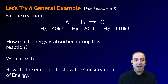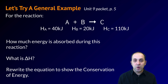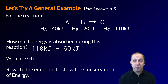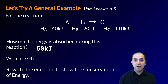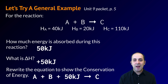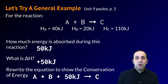Here's a general example from page 5 of your unit 9 packet. For the reaction A + B → C, the enthalpy of A is 40 kJ, B is 20 kJ, and C is 110 kJ. To find the energy absorbed, take the product energy of 110 kJ minus the total reactant energy of 60 kJ, giving 50 kJ absorbed. This is endothermic, so delta H is positive 50 kJ. Rewriting to show conservation of energy: A + B + 50 kJ → C.